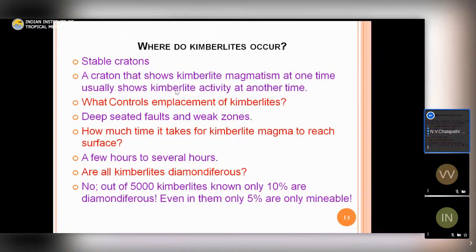A craton showing kimberlites at one time has been demonstrated to show kimberlite activity at another time as well — in South Africa you find Proterozoic, Cretaceous, and Eocene kimberlites at the same place. Kimberlite emplacement is controlled by deep-seated faults and lineaments. Based on experiments, it has been calculated that kimberlite magma reaches the surface in just a few hours — covering 150 kilometers in a few hours.